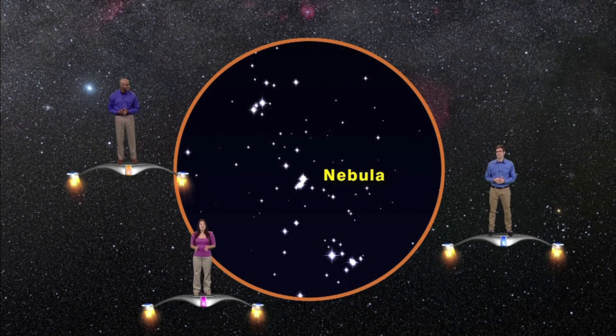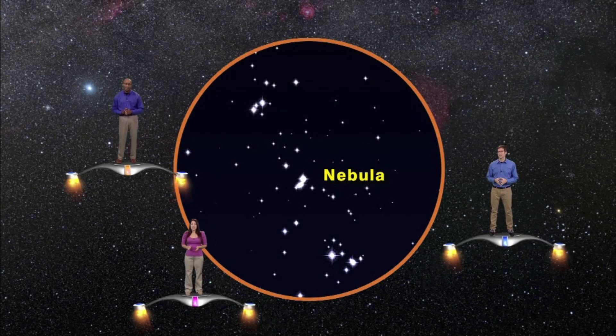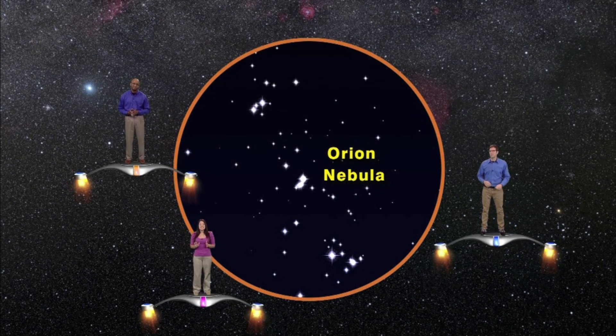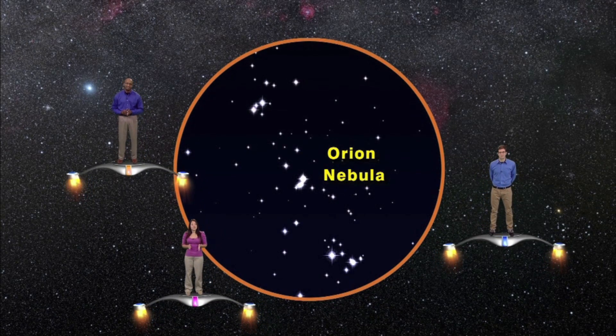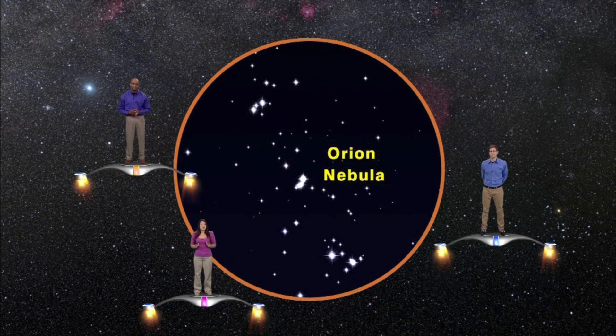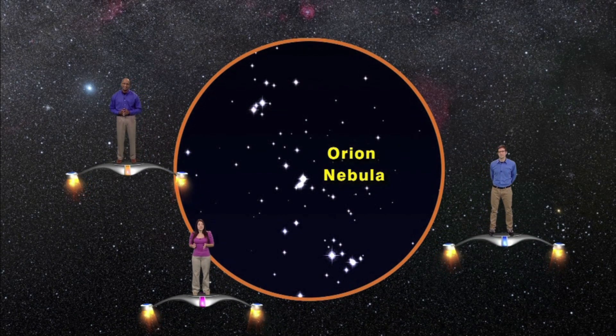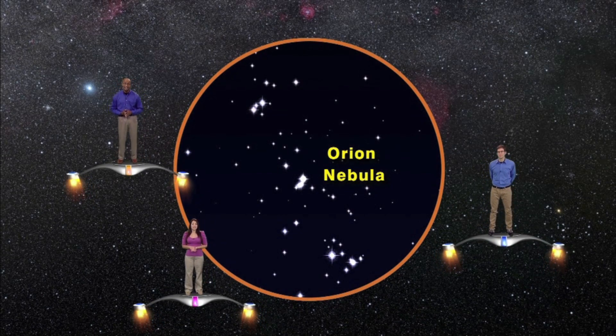A nebula is a cosmic cloud of gas and dust. The great nebula of Orion is actually a stellar recycling center. Some nebulae are what's left behind after a star dies. Within this nebula, brand new stars have been and are still being born.